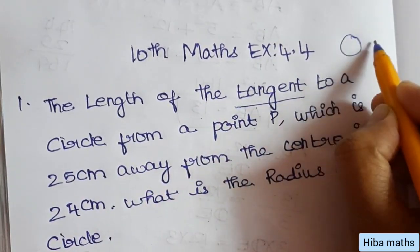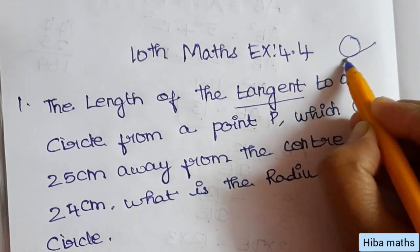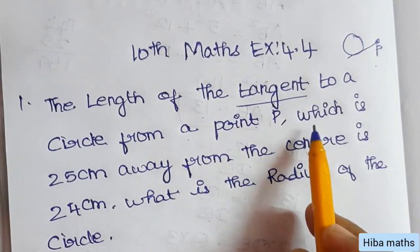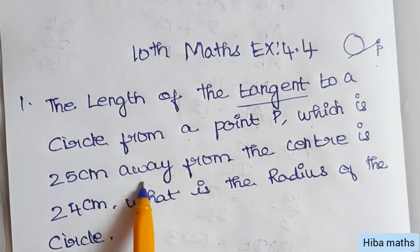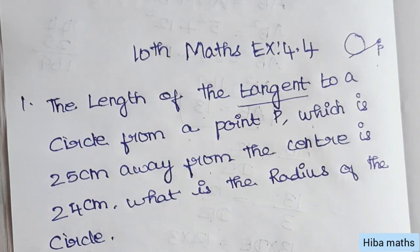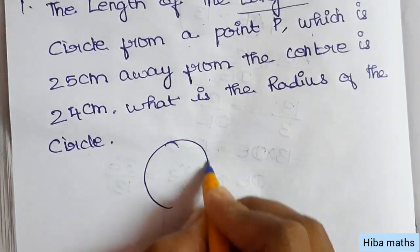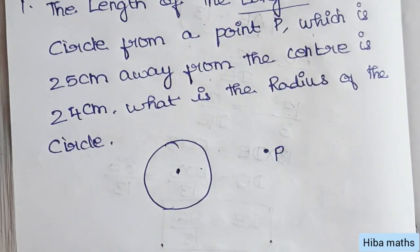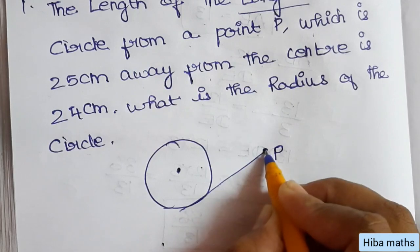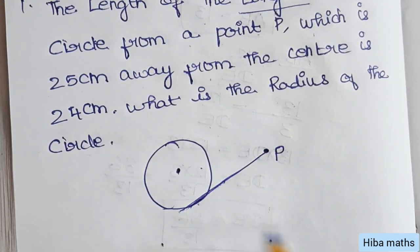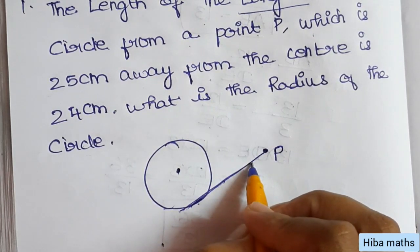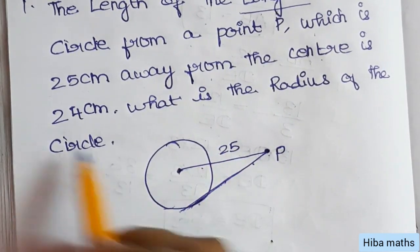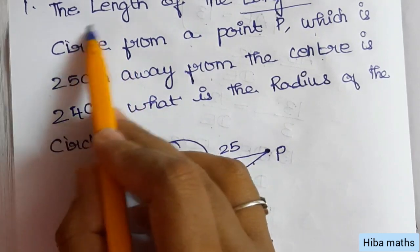If you know the tangent to a circle — a tangent from a point to a circle — which is 25cm away from the center. Now we have a circle, we have a center. Let's drop a tangent to a point on the circle. The point is 25cm away from the center, and 24cm is the length of the tangent. That is 24.